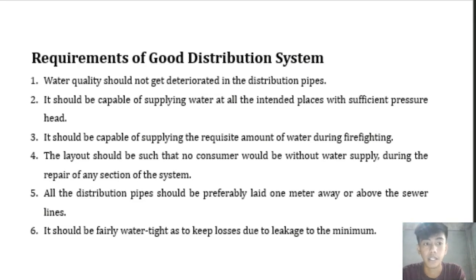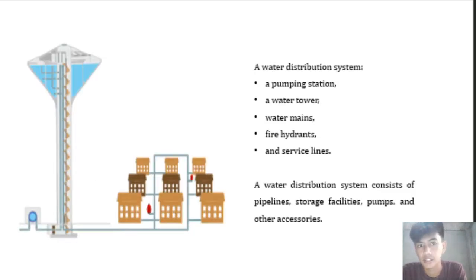The layout should be such that no consumer would be without water supply during the repair of any section of the system. All distribution pipes should preferably be laid one meter away from or above the sewer lines. Lastly, the system should be fairly watertight so as to keep losses due to leakage to a minimum.